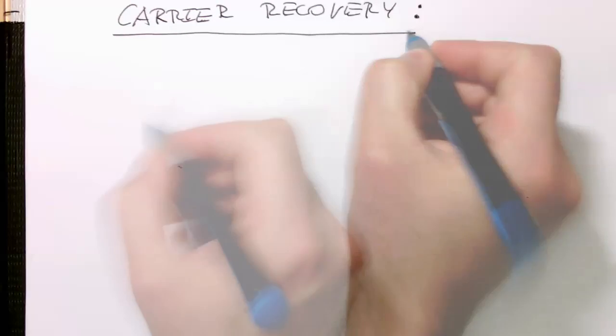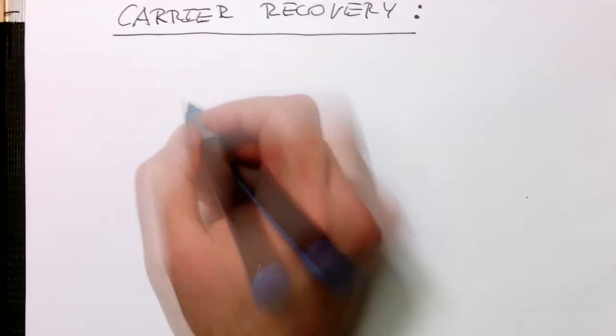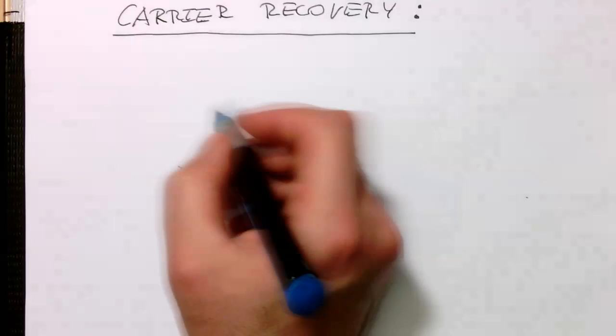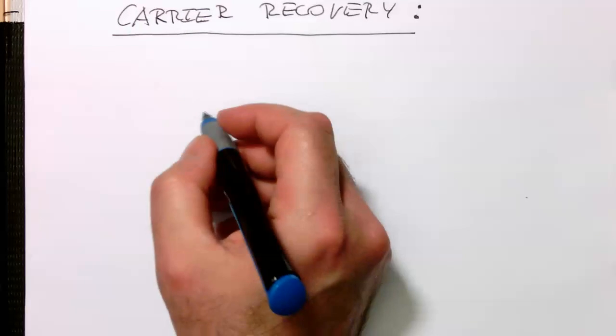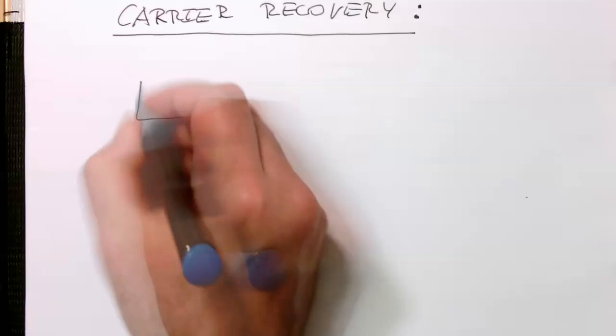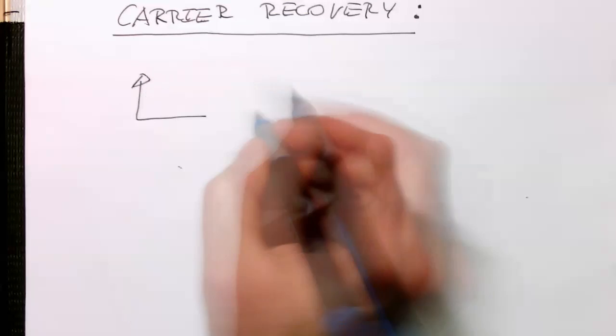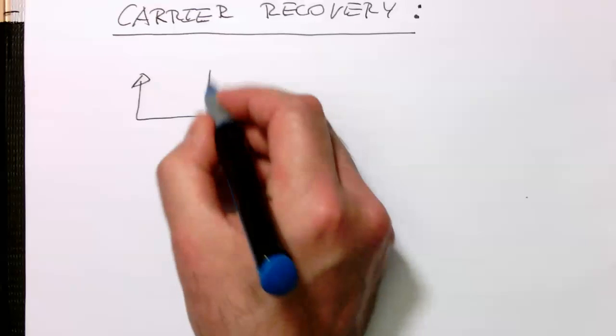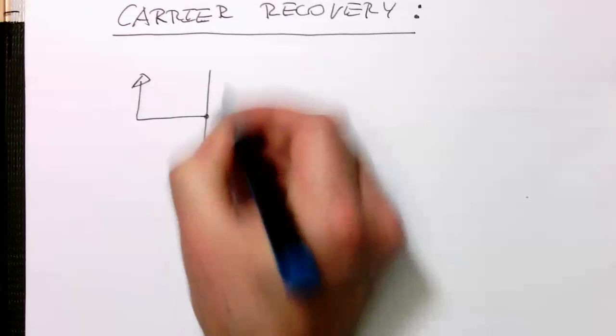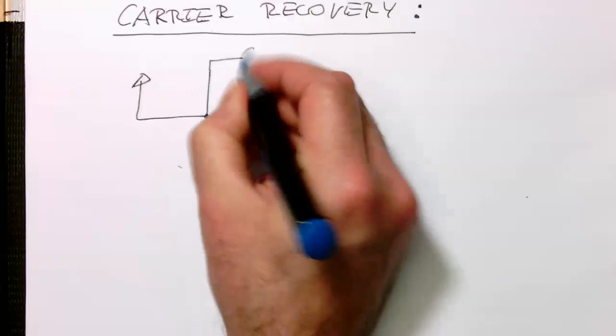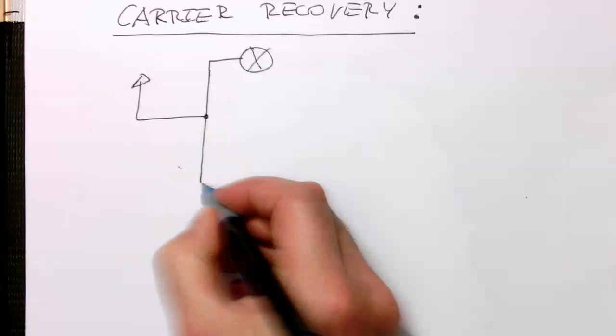So remember, I just draw the classical demodulator here, the bandpass demodulator. So we've got here our aerial and then if you have a quadrature demodulator, then we have here two multipliers.